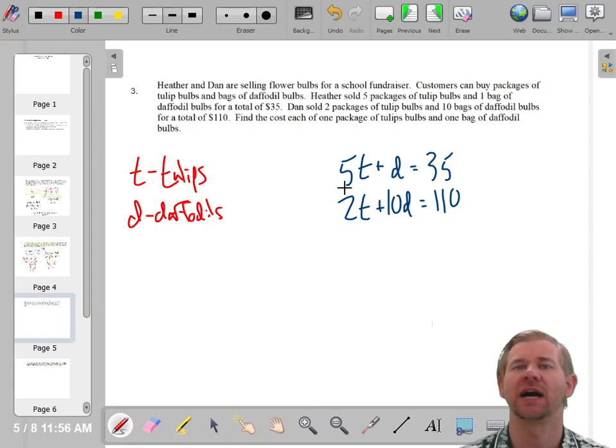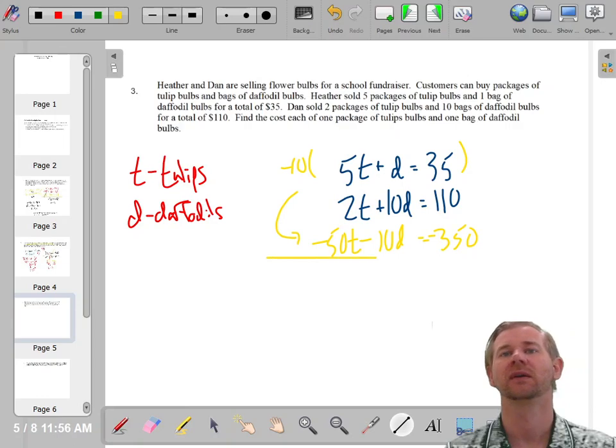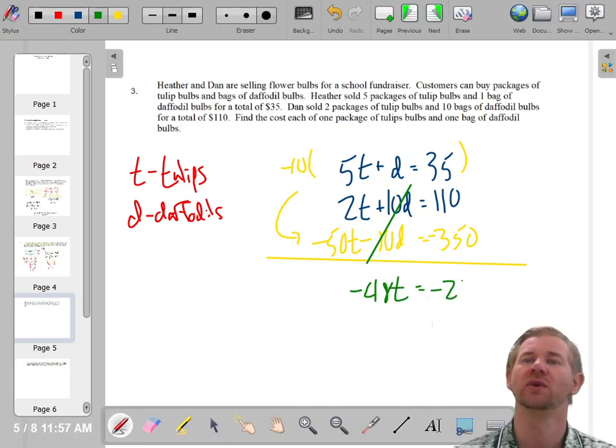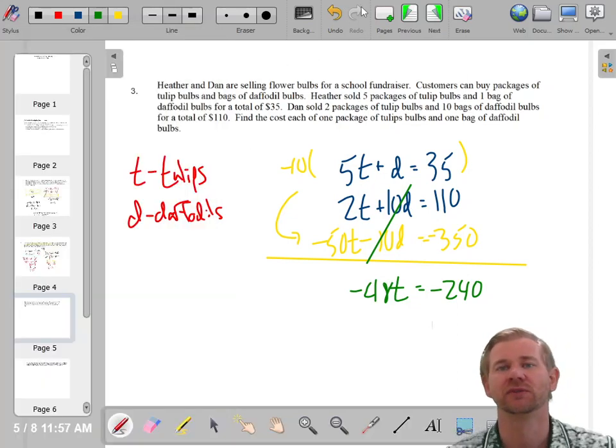So what variable do I want to get rid of? I will think two doesn't go into five, but I could multiply this guy by negative 10. And then this would be negative 10D. So negative 50T and negative 10D and then negative 350. So when I do that, those cancel out and you have negative 48T equals negative 240. Negative 350 plus 110. And then I'll do 240 divided by negative 48 and get 5. T equals 5.